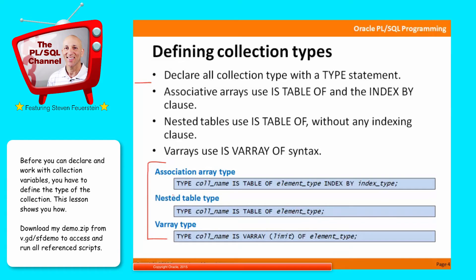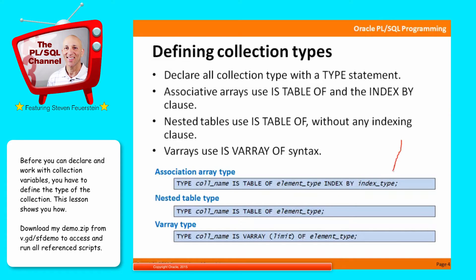Each collection type has its own variation on the type statement. With an associative array, you use the TYPE keyword to declare a new type for PL/SQL, then IS TABLE OF — which dates back to Oracle 7 when these were called PL/SQL tables. You specify the data type — is it a table of strings, numbers, or dates? — and then INDEXED BY. The associative array type statement always has the INDEXED BY clause, and it can be indexed by string or integer. So the syntax is: TYPE, IS TABLE OF, INDEXED BY — that's an associative array type.